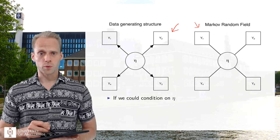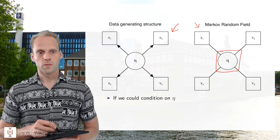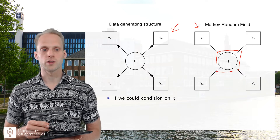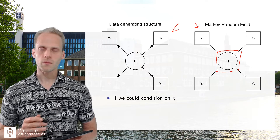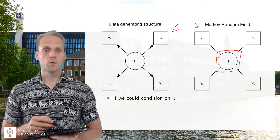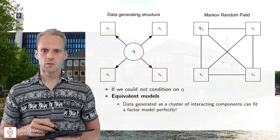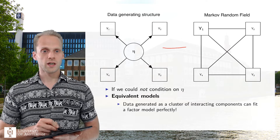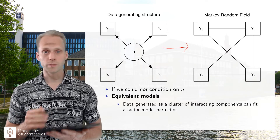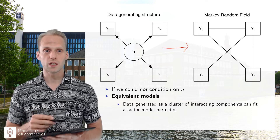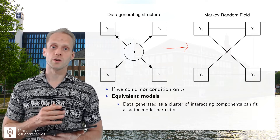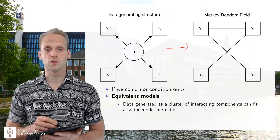Here's a very interesting property: this does include a latent variable, because according to the latent variable model, the latent variable is what makes these items independent. So y1 is independent from y2 after conditioning on the latent variable. Typically in network models, we don't have latent variables — we only include observed variables. So the resulting Markov random field would be a fully connected network. If you generate data under the latent variable model, the corresponding network model would be a fully connected network model.